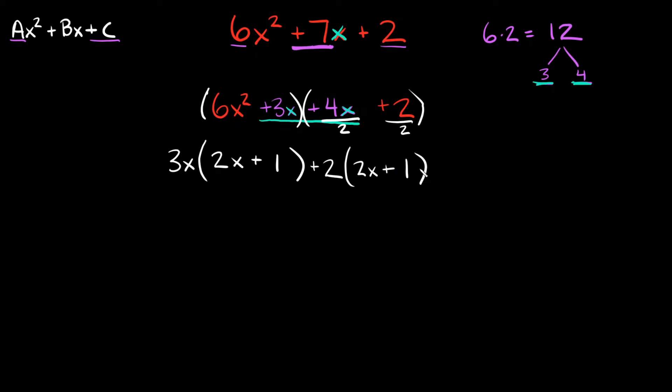Now whenever you factor by grouping you should notice that you got the exact same thing in both of your parentheses right here. If you didn't you might have done something wrong. So once you notice that you got the same thing in both of your parentheses all you have to do is rewrite whatever is there just once. So we're going to rewrite it once, 2x plus 1 in parentheses.